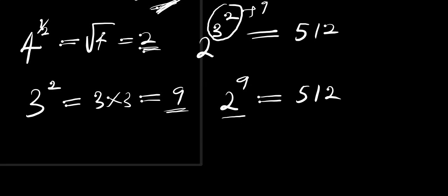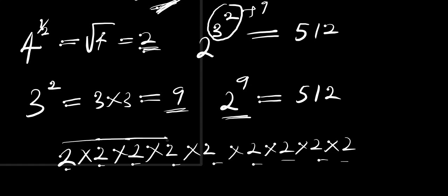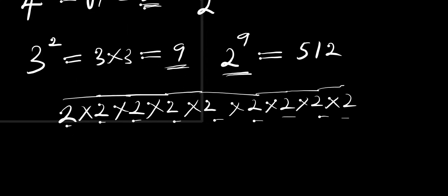2 to the power of 9 means 2 multiplied nine times: 2 times 2 is 4, times 2 is 8, times 2 is 16, times 2 is 32, times 2 is 64, times 2 is 128, times 2 is 256, times 2 is 512. So we have 512 equals 512.